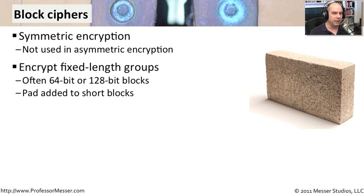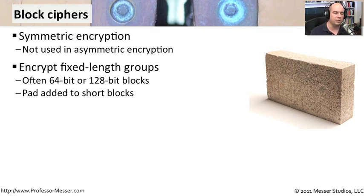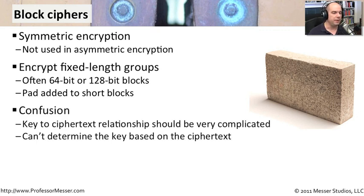In a block cipher, sometimes you'll have some text that doesn't quite fill up the block. So occasionally you will pad that data, because you really do need a full block of 64 bits, 128 bits, or whatever that size is, to be able to do that encryption.